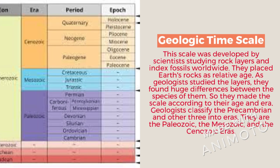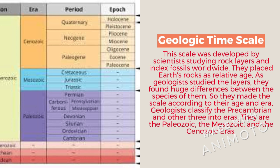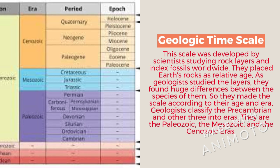The geologic time scale was developed by scientists studying rock layers and index fossils worldwide, placing Earth's rocks in relative age. As geologists studied the layers, they found huge differences between species, so they made a scale according to their age and era. Geologists classify the Precambrian and other divisions into eras: the Paleozoic, Mesozoic, and Cenozoic eras.